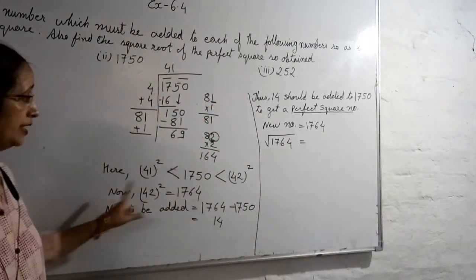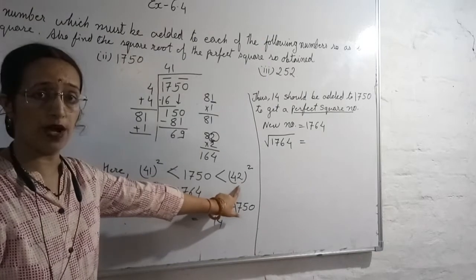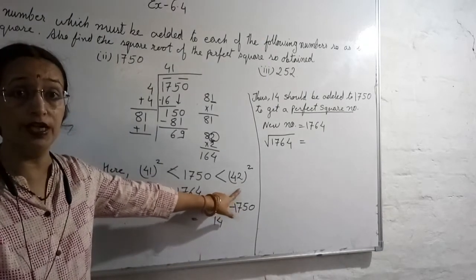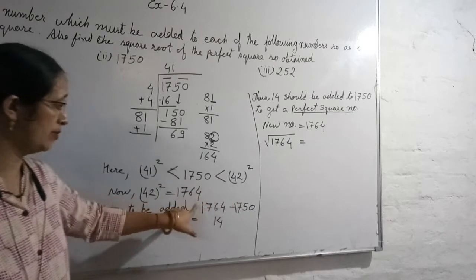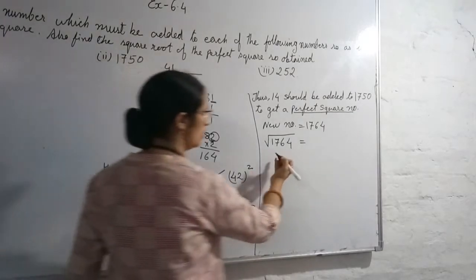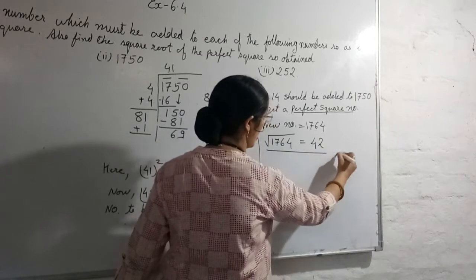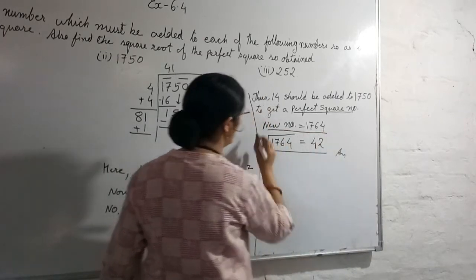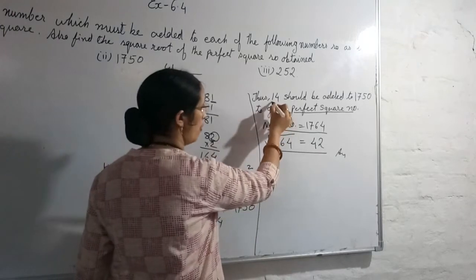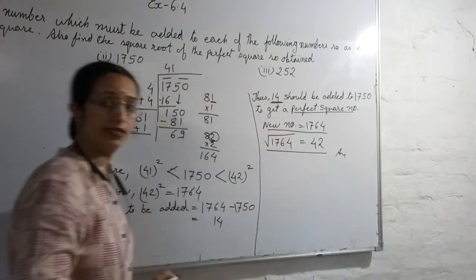You can do directly by the logic. That will be 42 because we got the answer by squaring 42 only. So it will be 42. The three answers are: square root of the new number, the new number, and what should be added. 14 should be added. Clear.